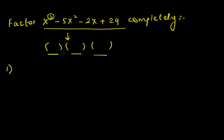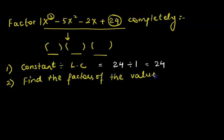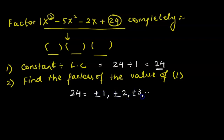Step one: take the constant of the polynomial — the value with no variable attached — and divide it by the leading coefficient. The leading coefficient is 1 in this case, so we divide 24 by 1 and get 24. Step two: find all the factors of that value. Here the value is 24, so we write all integer factors, both positive and negative: ±1, ±2, ±3, ±4, ±6, ±8, ±12, ±24.